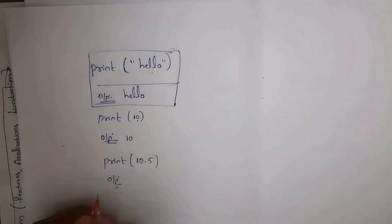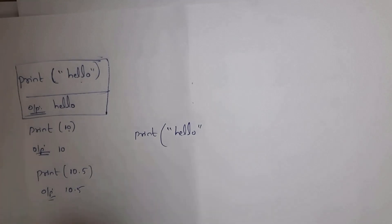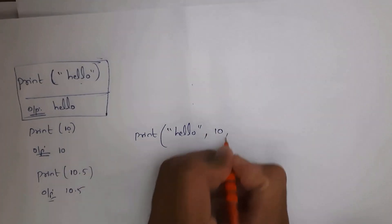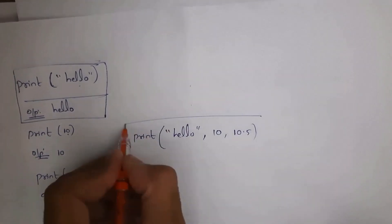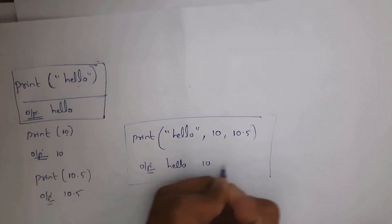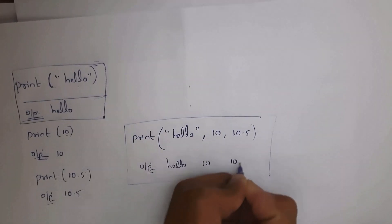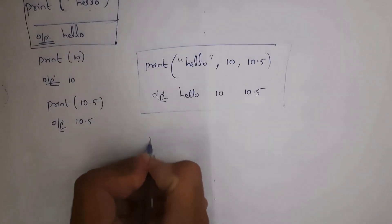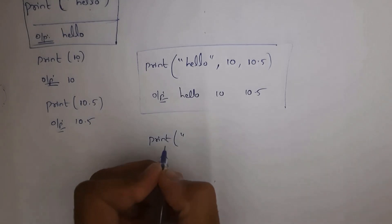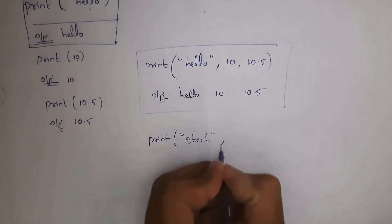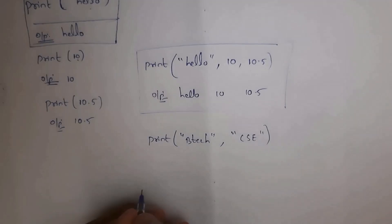Here I've written print(10.5) and I get output 10.5. In another example I've written print('hello', 10, 10.5) and the output is 'hello', 10, and 10.5. If I want to print two words — 'btec' and 'csc' — I write print('btec', 'csc') and I get output 'btec csc'.